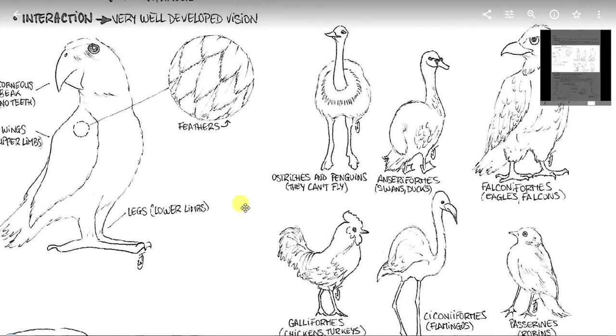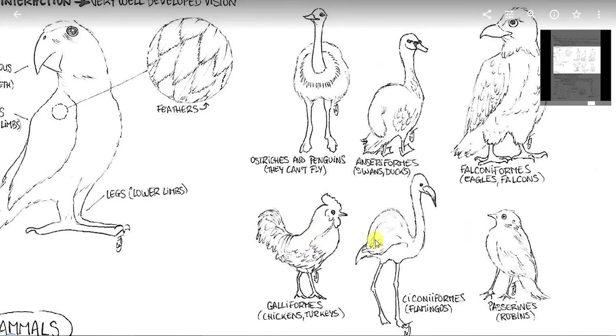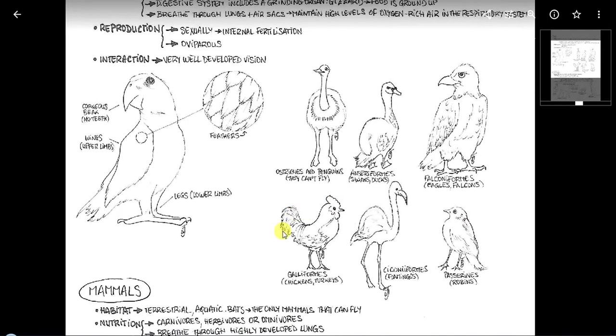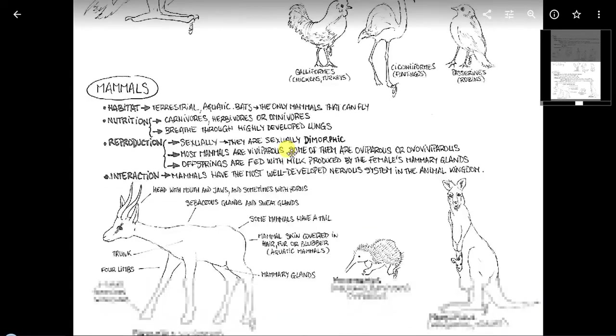Limb es extremidad. Y algunos ejemplos de tipos de aves tenemos los ostriches and penguins, anseriformes, swans and ducks. Es decir, patos y cisnes se engloban en los anseriformes. Después tenemos los falconiformes, como los águilas o los halcones. Galliformes, las gallinas, los pavos, etc. Psittaciformes, como los flamencos. Y los paserines, como los ruiseñores o este tipo de aves. Hay muchas más.